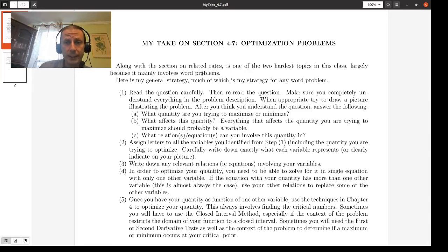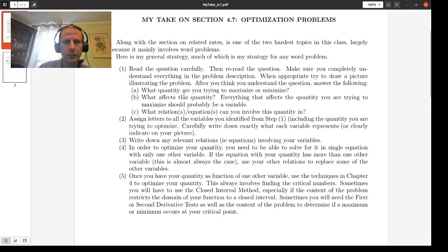Now the most important thing when you're trying to do an optimization problem is to make sure you understand the problem. Read the question. Reread the question. Imagine a picture. Draw a picture of the problem. And once you understand the question then you can think to answer these questions like what quantity are you trying to maximize or minimize?